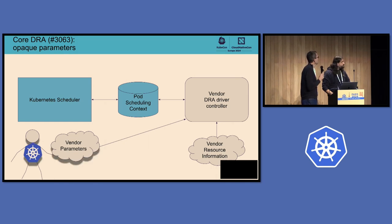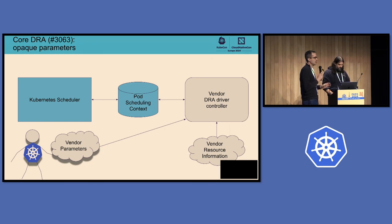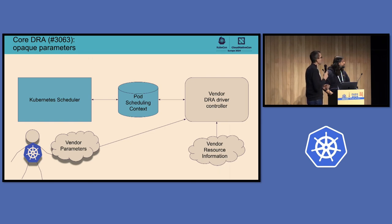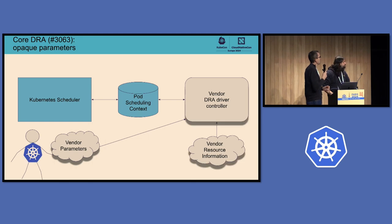The user then creates parameters for their resource claim as a standalone object using a vendor CRD. That CRD describes what the user wants, basically influencing the scheduling. It also has configuration or setup parameters that need to be passed down to the actual driver on a node to set up the hardware. All of those go into these claim parameters.